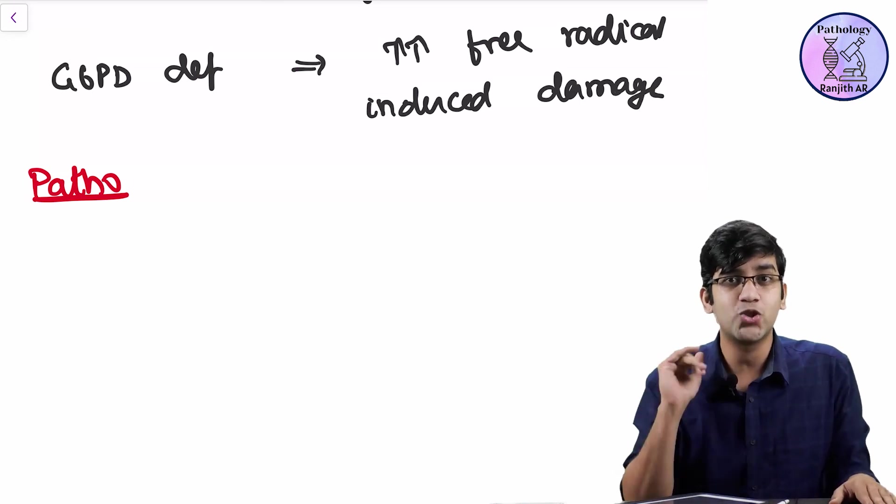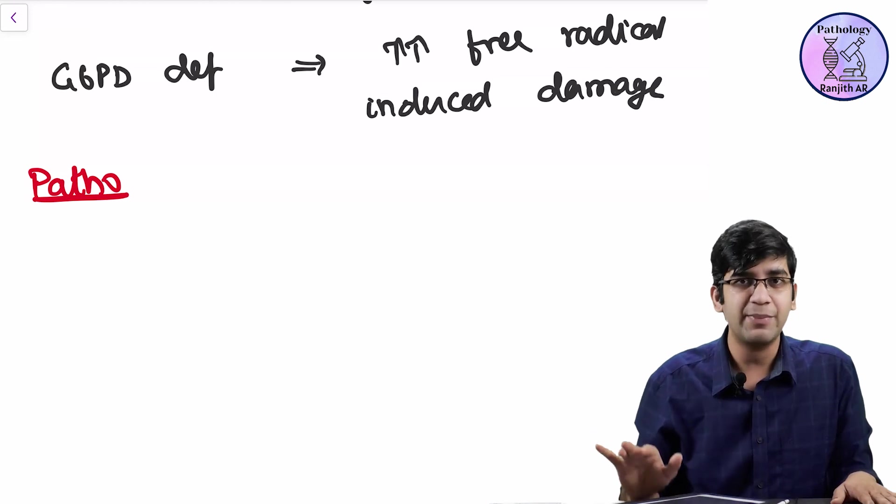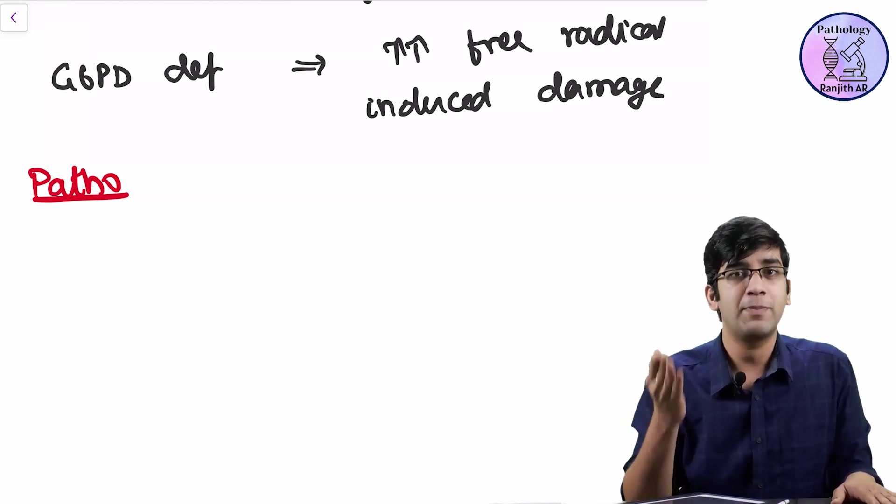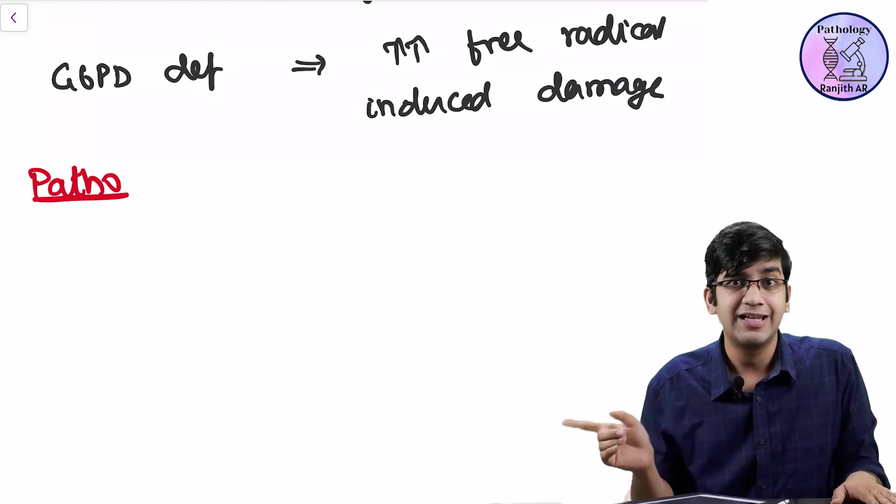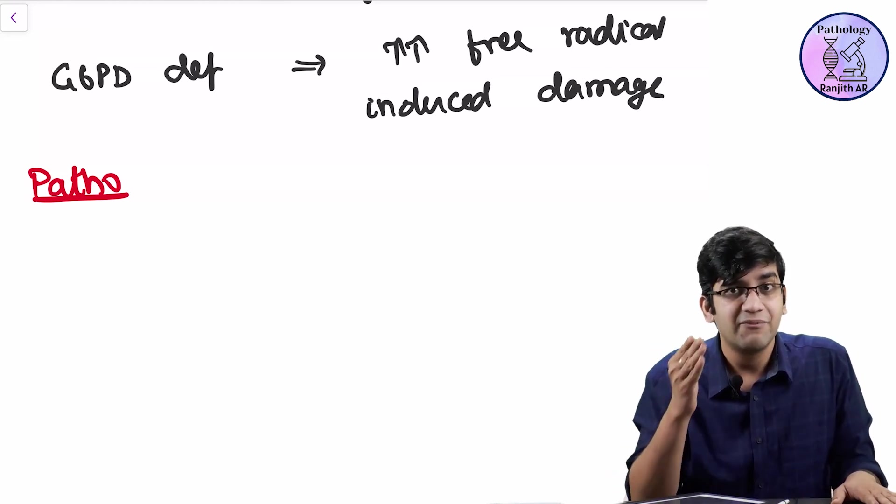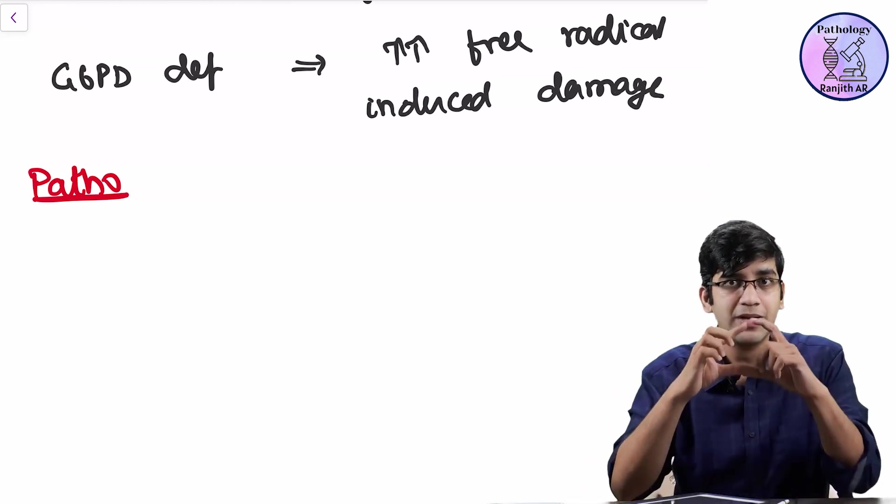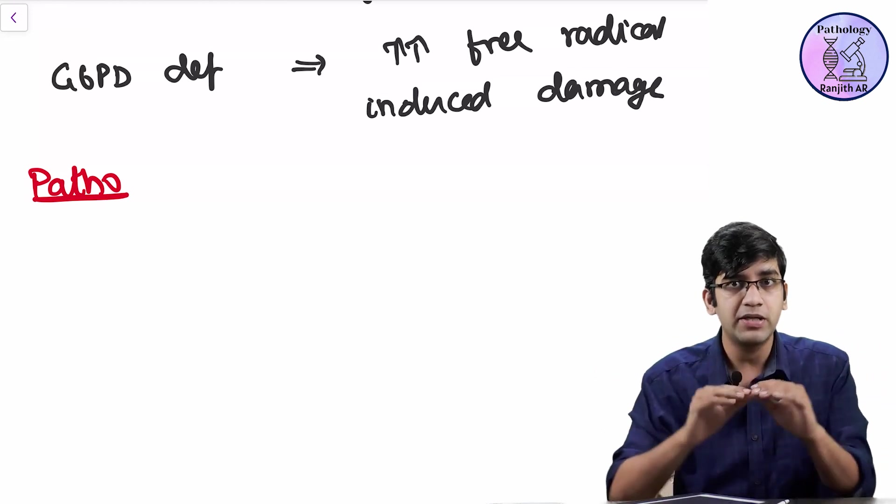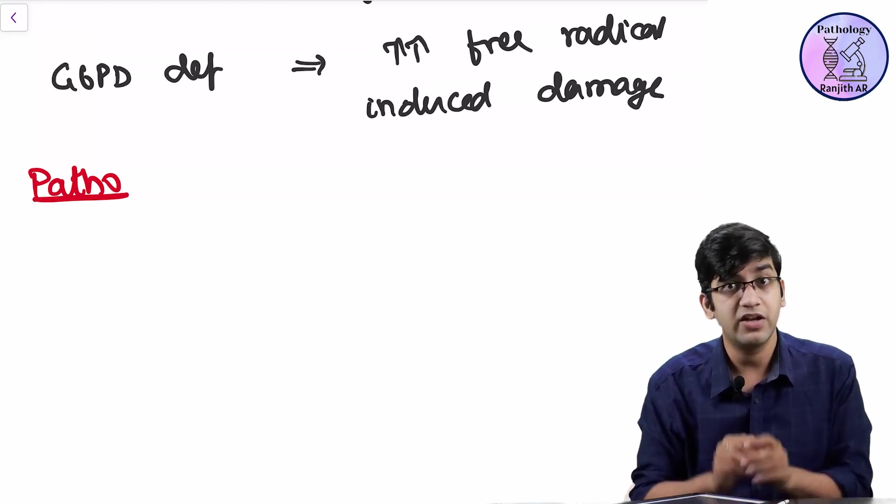When my free radical quantity is not so high, it will cause damage still. It will cause membrane damage still. When membrane of an RBC is damaged, like what we saw in the previous disease, my membrane is damaged. So my RBC from my biconcave shape will become spherical. It will become a sphere.